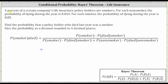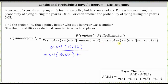The probability of a smoker is given as 4%, or 0.04, times the probability the policyholder died given they were a smoker, which is 0.05. All this is divided by, again, 0.04 times 0.05, plus the probability of a non-smoker — if 4% are smokers, 96% are non-smokers, which is 0.96 — times the probability the policyholder died given they were a non-smoker, which is given as 0.014.